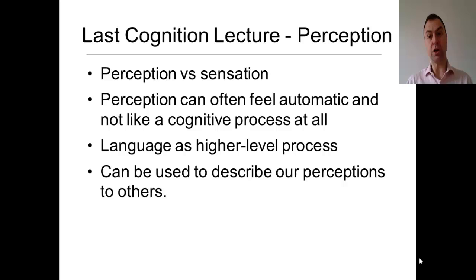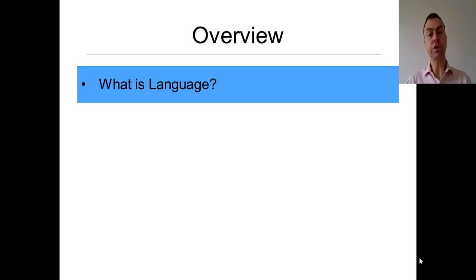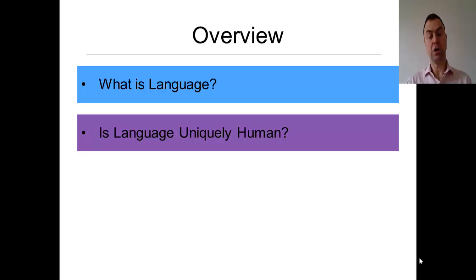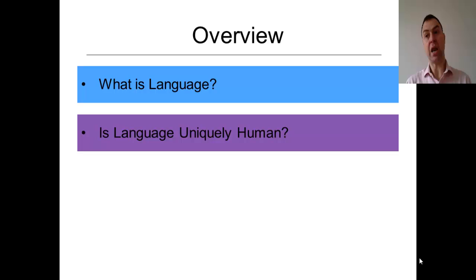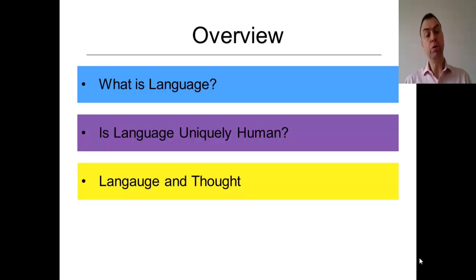Let's talk about what we're actually going to cover in today's lecture. First, we'll look at different definitions of what language is and try to get a more formal idea of what we mean by language. Then we'll look at a question debated for a long time within psychology and psycholinguistics: whether language, under certain definitions, is unique to humans, and whether non-human species can have or acquire language.